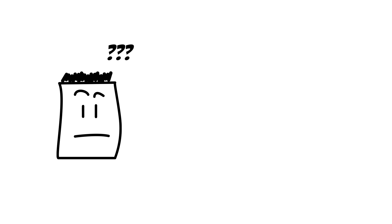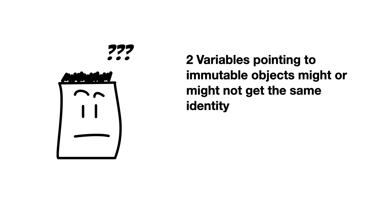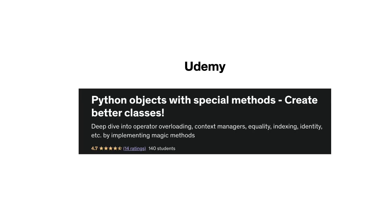There are however some edge cases. For example, two variables pointing to immutable objects might or might not get the same identity — this can even depend on the Python runtime you are using. My advice is to always test equality and identity yourself to exclude any unexpected surprises. I explain object identity and object equality in depth in my Python data model course on Udemy. I'll put a link with a discount in the description.